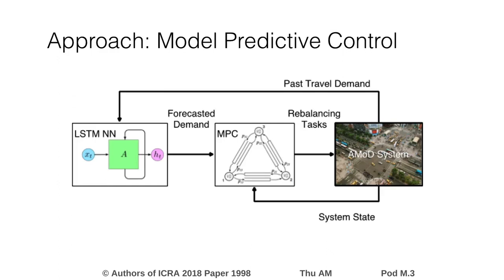In this paper we present a data-driven model predictive control approach. In broad terms, the algorithm works as follows. At a given point in time, we observe the system state and past travel demand. We use this to make short-term demand forecasts. Next, using the forecasted demand and the current system state, we use a network flow model to optimize the rebalancing strategy for the planning horizon. We then execute the beginning of the strategy and repeat the process.